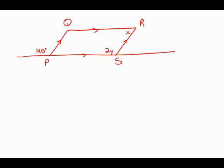What that means is we have all kinds of information about the angles. For example, this angle and this angle, those are called corresponding angles, and those are congruent. So 140 equals 2Y and Y equals 70.